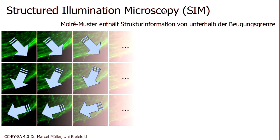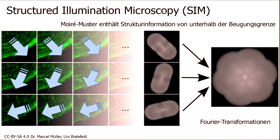We project this grid into our sample and shift it, turn it around and shift it again, then turn it again. And that's how we make this Fourier transformation from the raw data. If you put them all on top of each other, you get this flower-like shape.